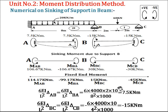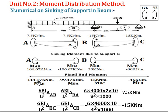We then calculated the moments in members AB, BA, BC, and CB accounting for sinking effects. The fixed moment in member AB is 114.17, in member BA it is minus 99.17, in member BC it is plus 15 kNm, and in member CB it is minus 45 kNm.